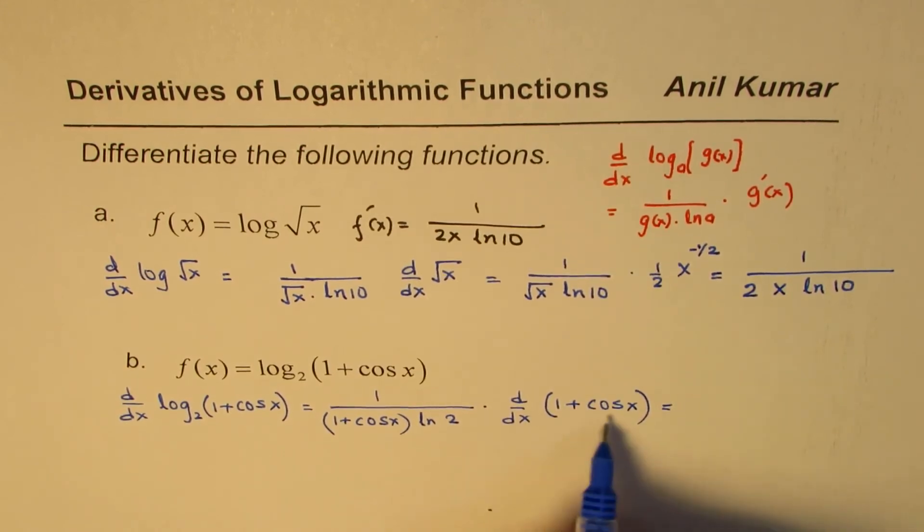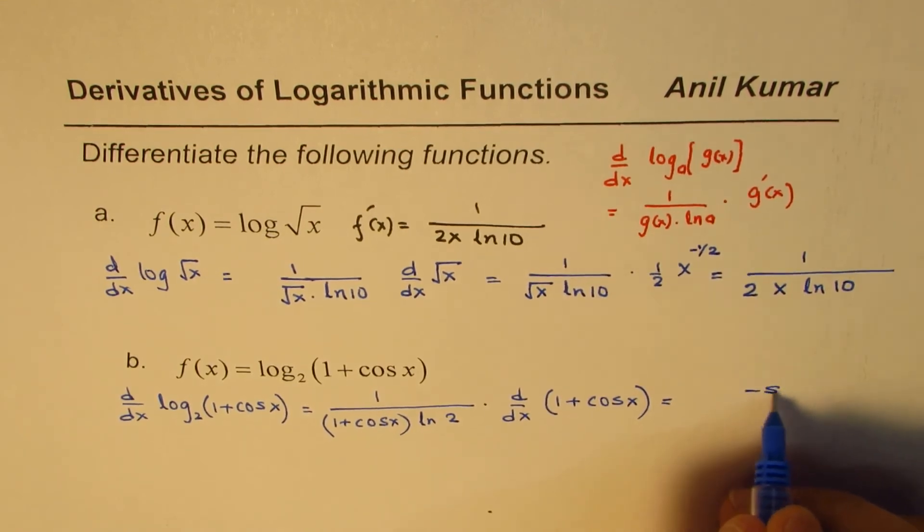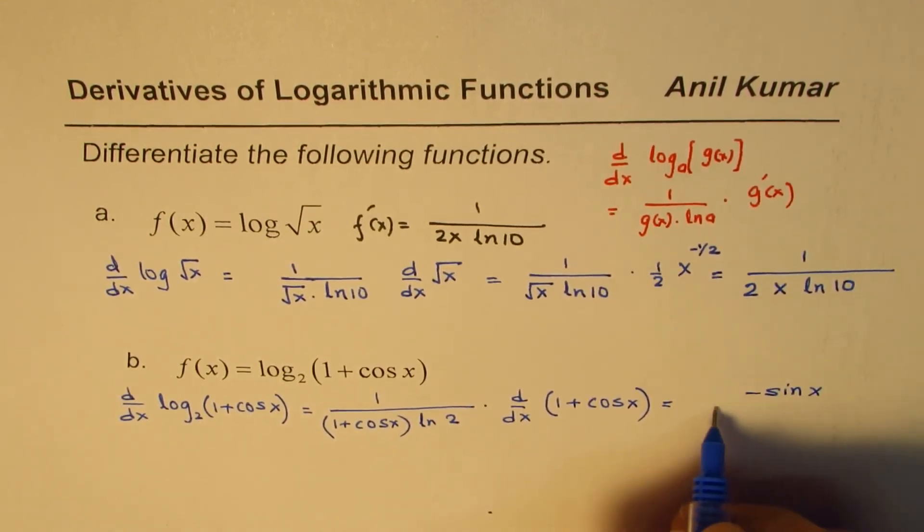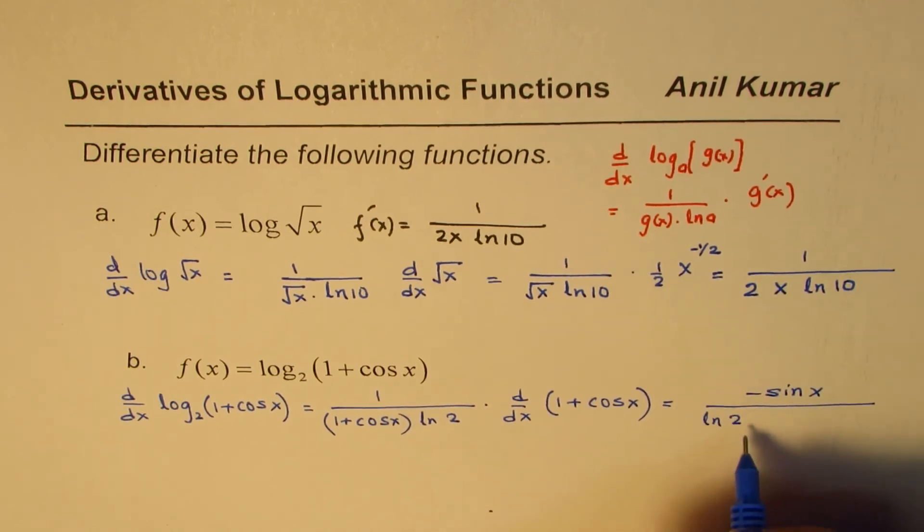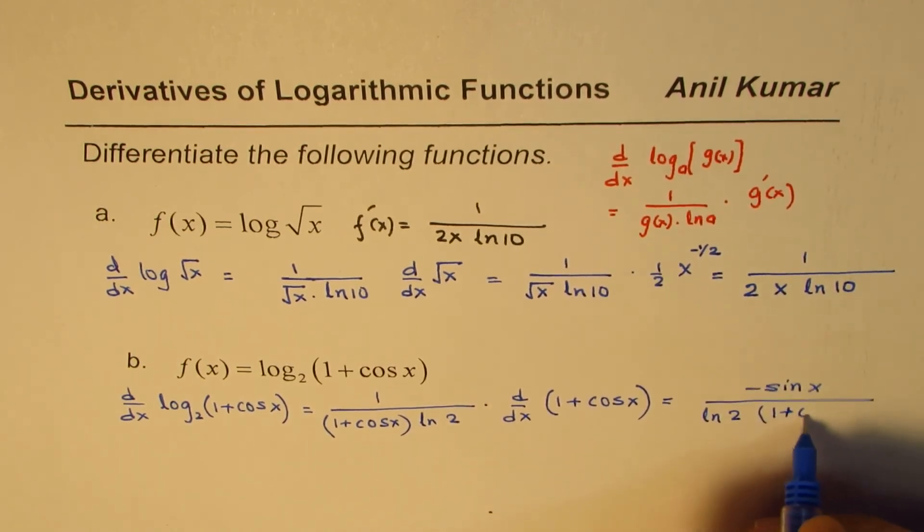So, that should be equal to, derivative of this is, derivative of 1 is 0, for cos x is minus sin x. So, we get minus sin x divided by all this. You can write ln 2, and then you can write 1 + cos x.